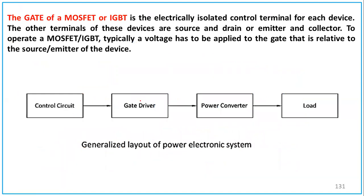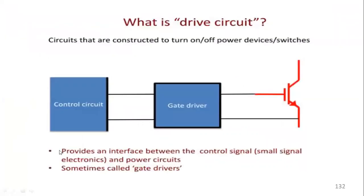In the basic circuit, you have the control circuit, then the gate driver, which in turn drives the power converter switch, and then we get the load according to our requirement. It provides an electrically isolated control terminal for each device. The gate driver provides an interface between the control signal and the power circuit — it is also simply called the gate driver.